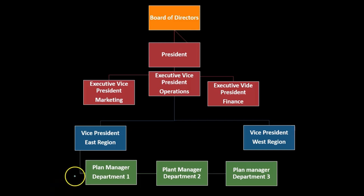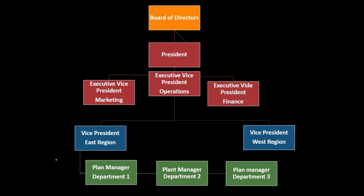In responsibility accounting reporting, we can see that the lower levels are going to have less controllable costs. The plant managers at the department level will have the controllable costs of their department. They will then be reporting to the vice president of the region, and the region essentially has controllable costs which include the plant manager costs, and so on as we go up through the hierarchy.